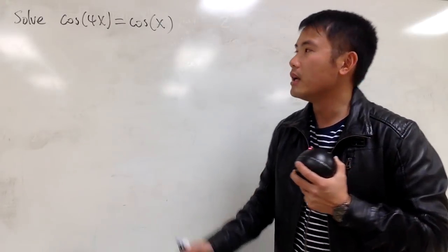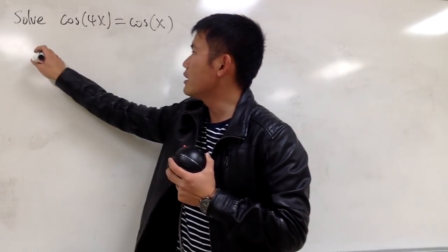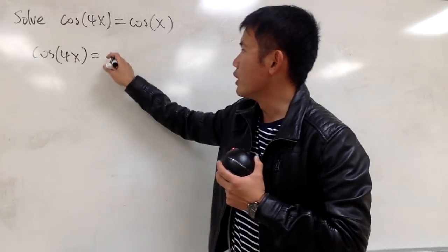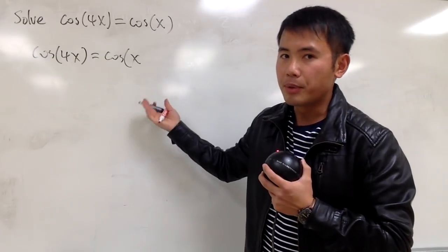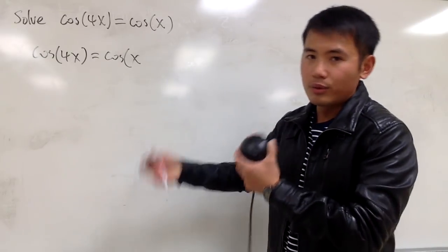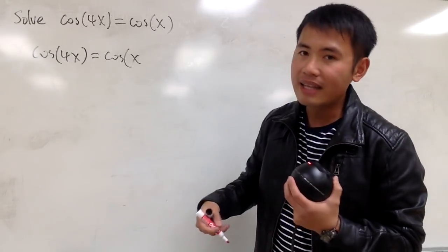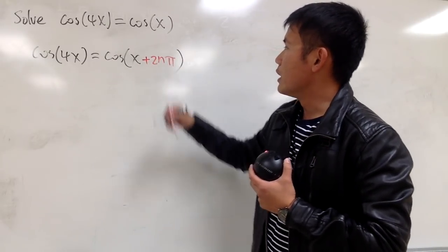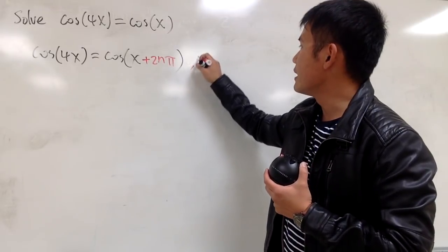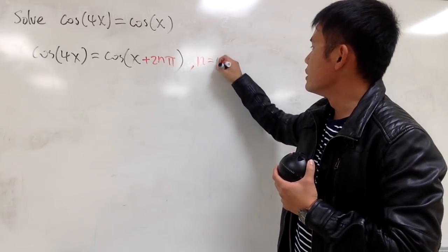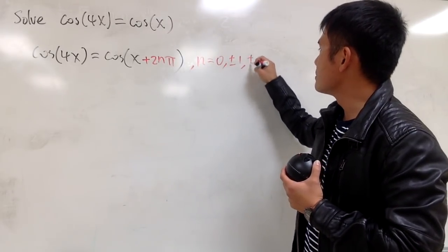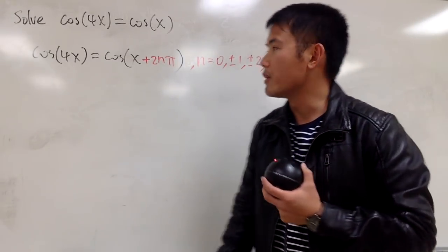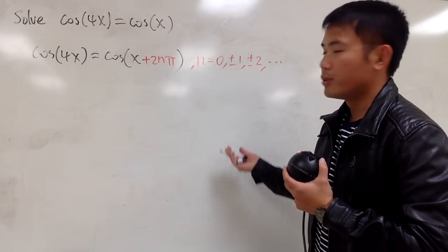The period for cosine is 2π. And if you look at this right here, let me just put this down again. Cosine of 4x equals cosine of x. But since the period for cosine is 2π, and then you can just keep adding that or subtract that, I will actually have to put down plus 2nπ. And what's n? Well, let me just indicate that n equals 0, plus or minus 1, plus or minus 2, and so on. Or you can also just put down n is just an integer.